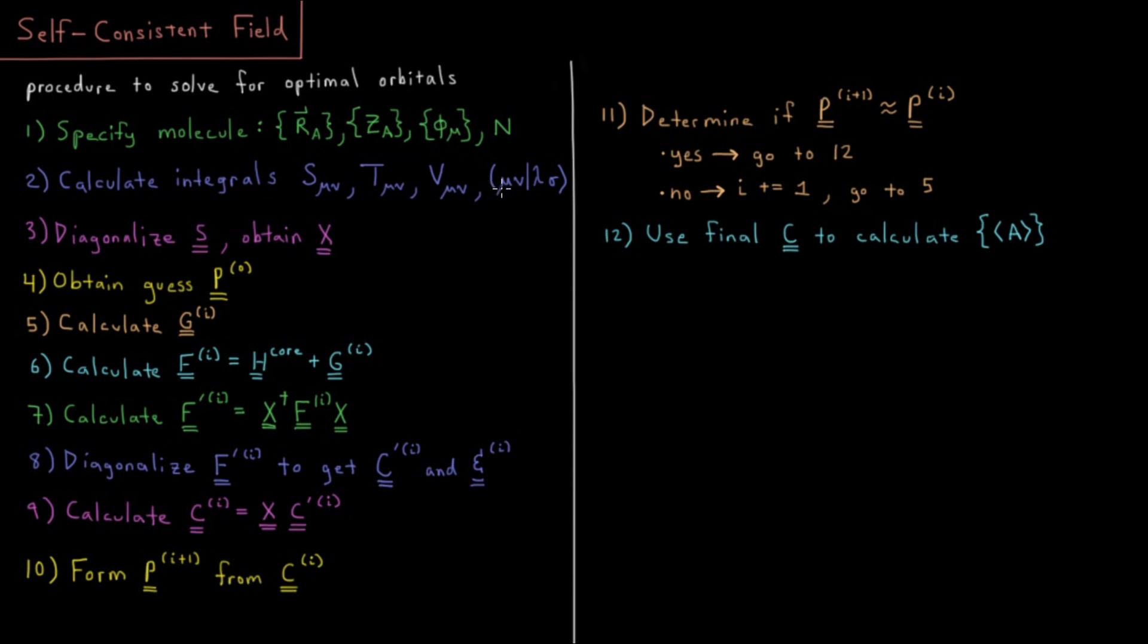And we need to compute two electron integrals between all quartets of possible combinations of basis functions. So, there's a quadratic number of these three, there's a quartic number of these. You can get away with a little bit of gains by exploiting the permutational symmetry of these integrals. But for the most part, the N to the fourth is unavoidable until you go to fairly fancy methods.